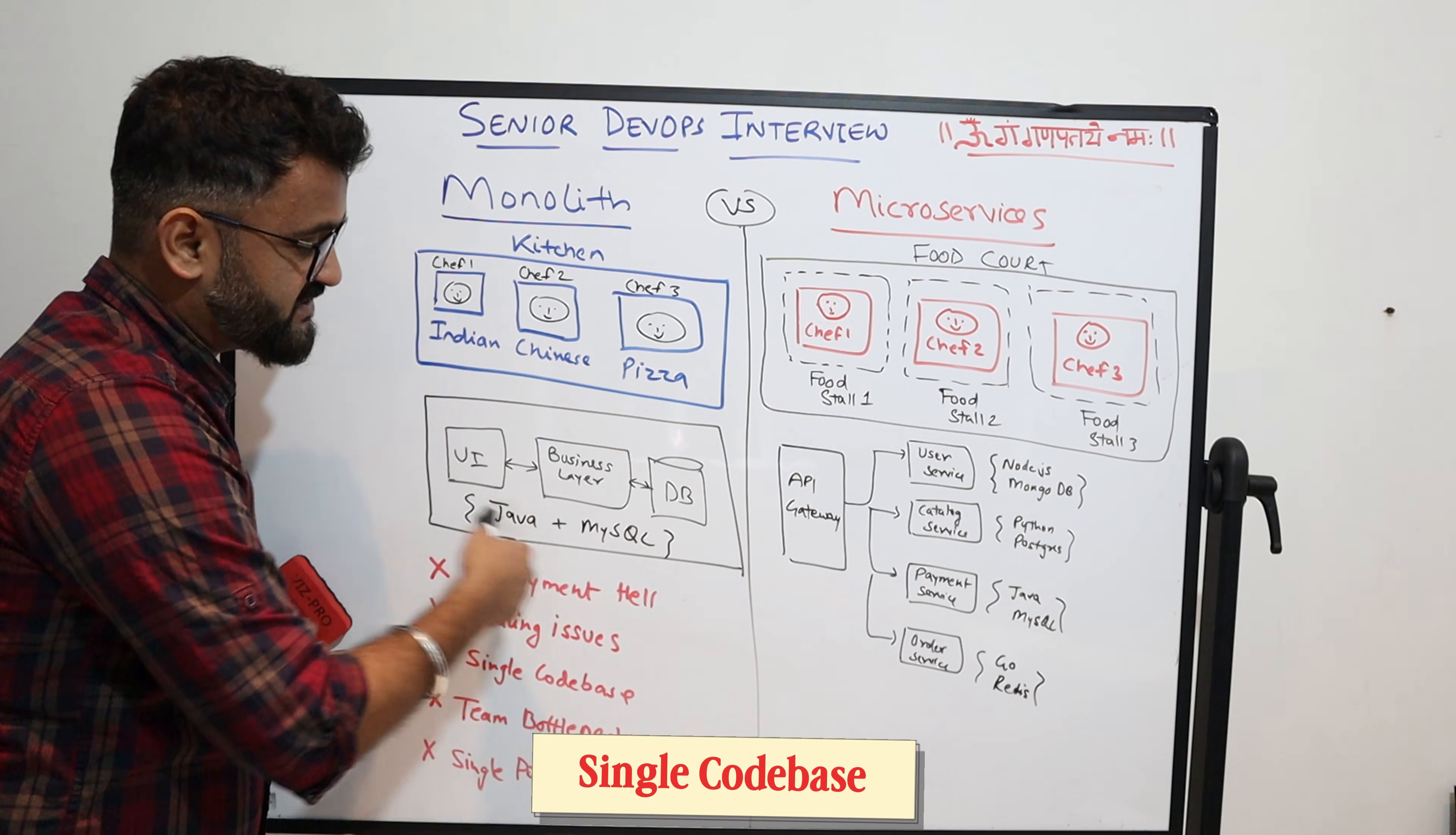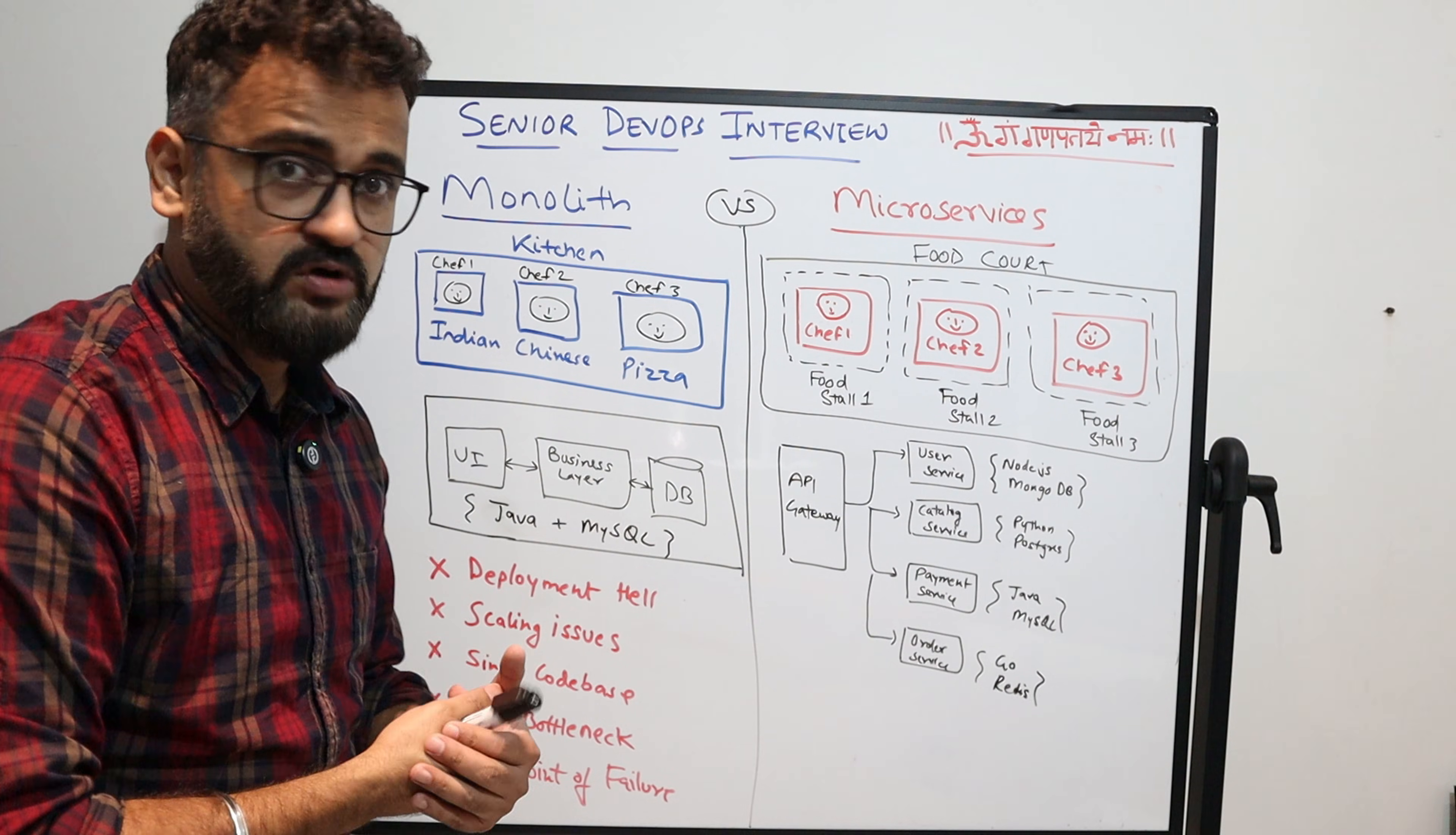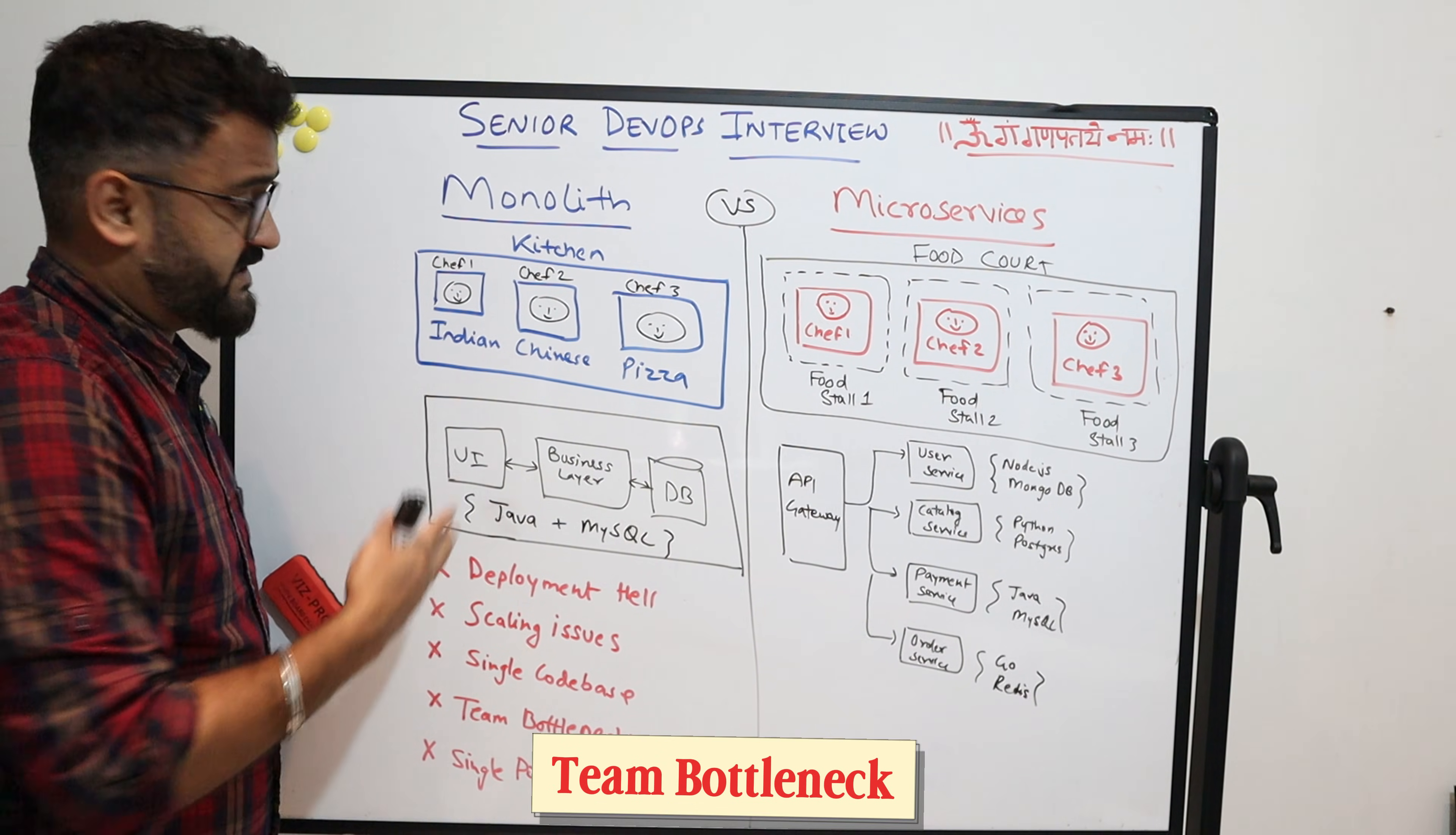Code base is for example Java and MySQL. Although there could be use cases for other programming languages or databases to come in—for example for UI you might use a lightweight database for caching—but you can't do it because it is a monolith. Then team bottleneck.